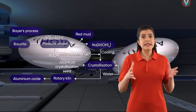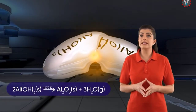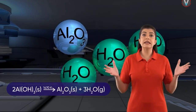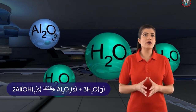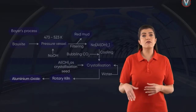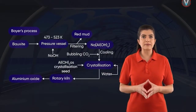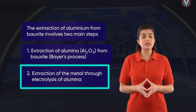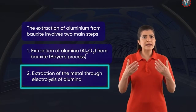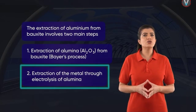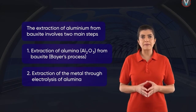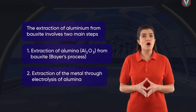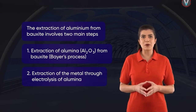Then, when heated to 1470 Kelvin, the aluminium hydroxide decomposes to pure aluminium oxide, giving off water vapour in the process. A large amount of the aluminium oxide so produced is then subsequently electrolyzed to produce pure aluminium. We will study the process of electrolysis of alumina in our subsequent topics.